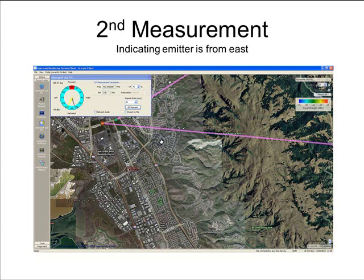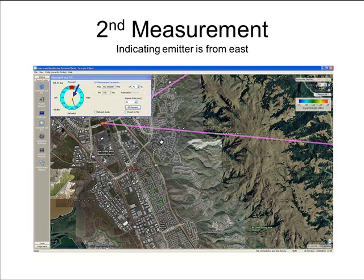45 seconds after the first measurement, the system automatically made a second measurement. It can be seen that the vehicle has moved along the road to the west, and the direction finding measurement confirms the initial measurement that the emitter is from the east. However, there is no intersecting of the measured lines of bearing, therefore there is no fixed point calculated. The signal strength is a little higher, around minus 55 dBm. In the control box it can be seen that the emitter is still coming from behind the vehicle. Note that the most recent measurement is shown in yellow; preceding measurements are shown in grey.